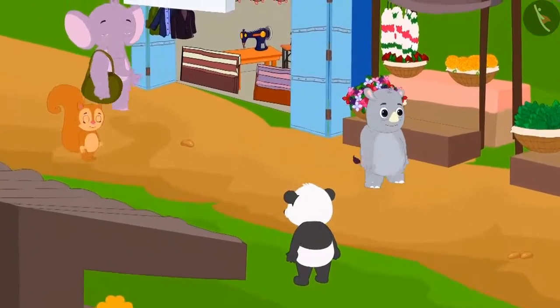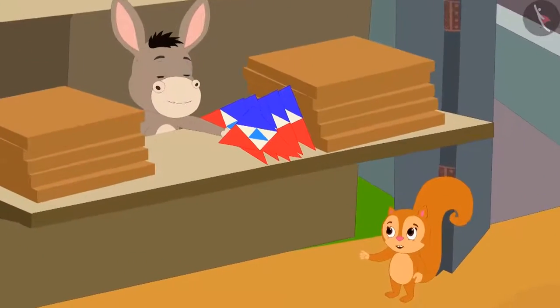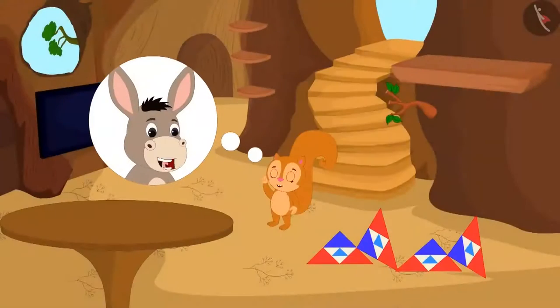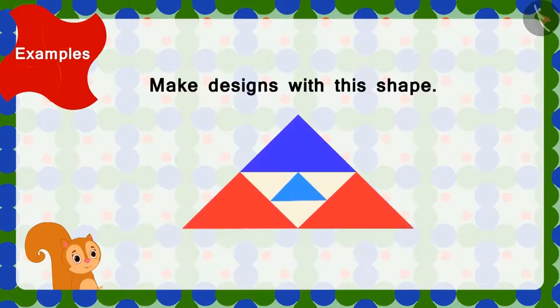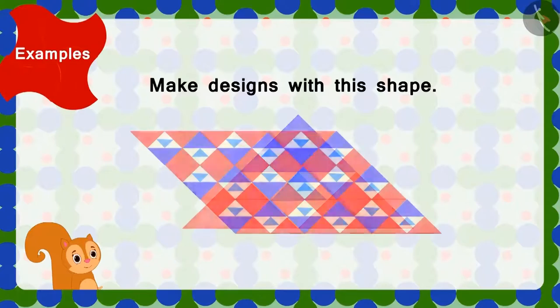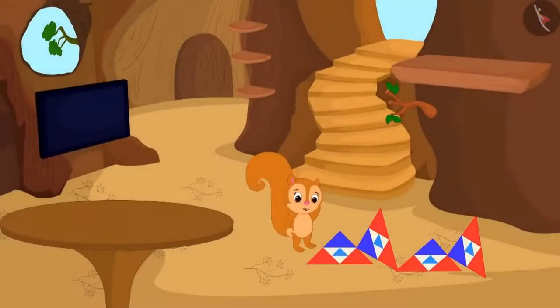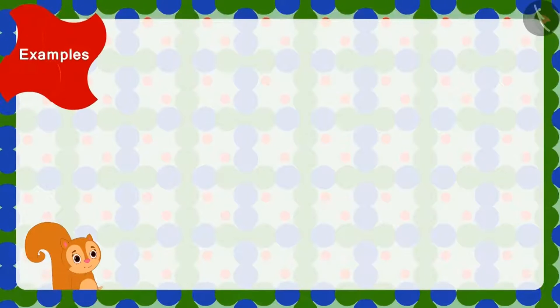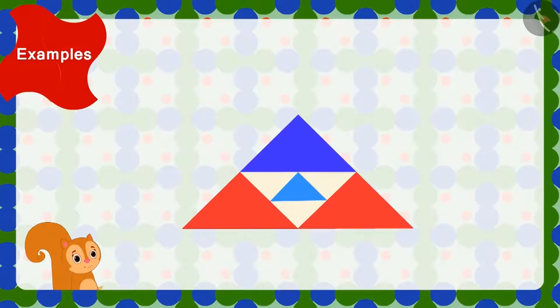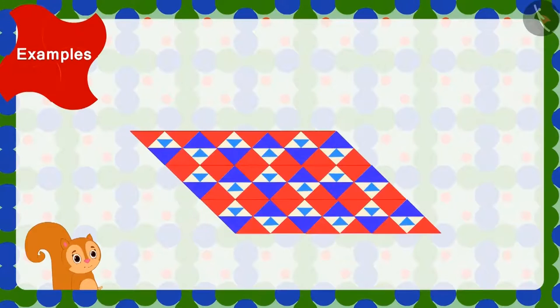Next day, Chanda bought these types of tiles from the market. The shopkeeper had told Chanda that she could use tiles with such shape and make this type of design. But Chanda is unable to make this design. Children, can you help Chanda make the design by making use of the tiles with this shape?